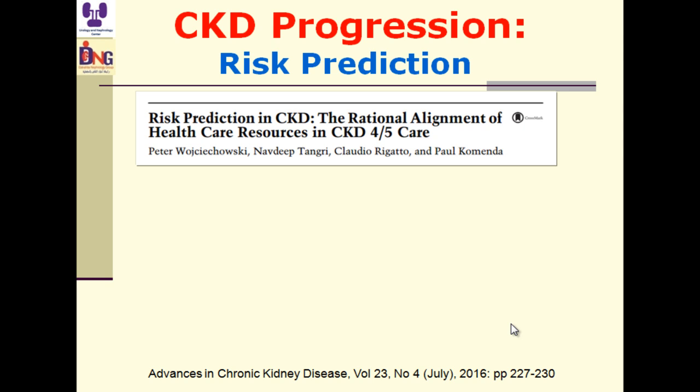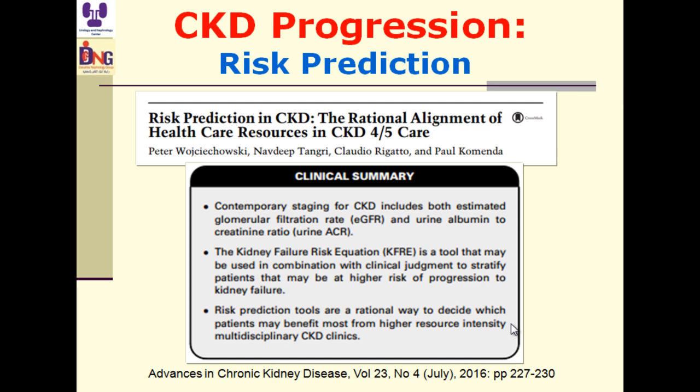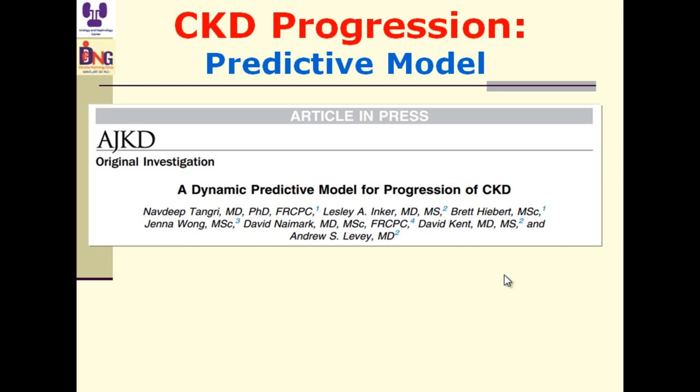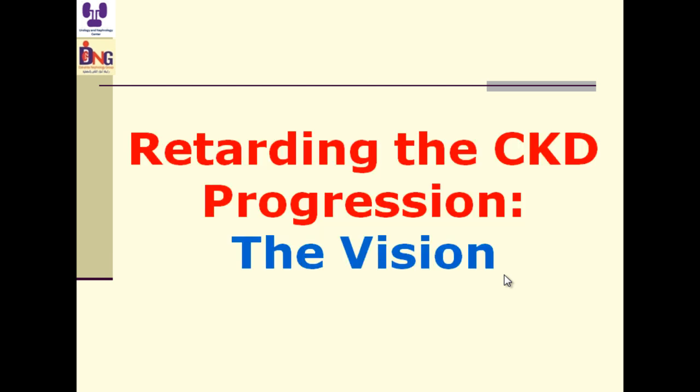Regarding risk prediction: we cannot prevent what we cannot predict. Data can be used to predict CKD progression. The kidney failure risk equation is a tool used with clinical judgment to stratify patients at higher risk of progression to kidney failure. But we need data registries — taking good history, examination, and registering everything. A dynamic predictive model can predict CKD progression in a dynamic way.